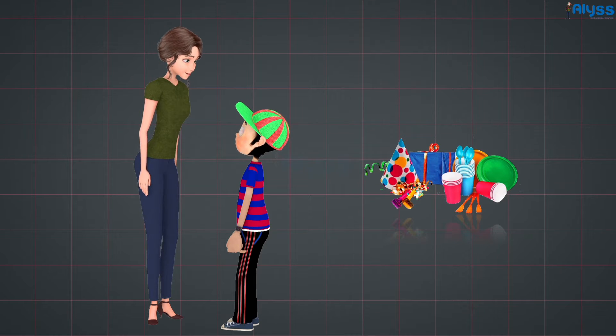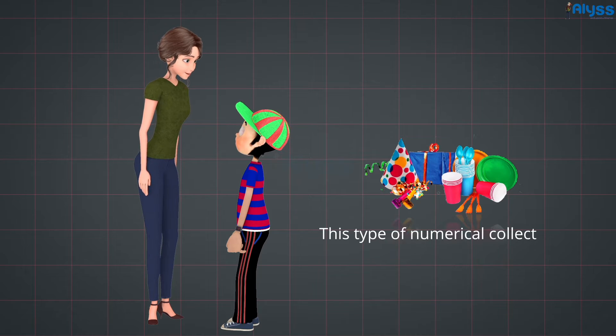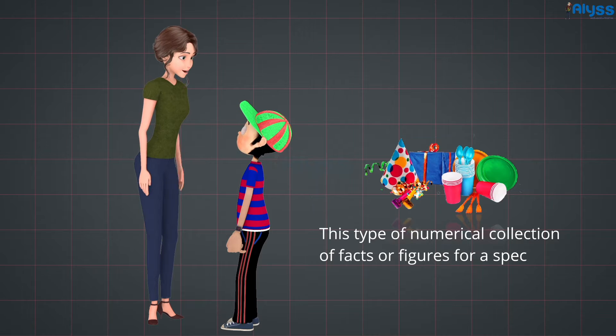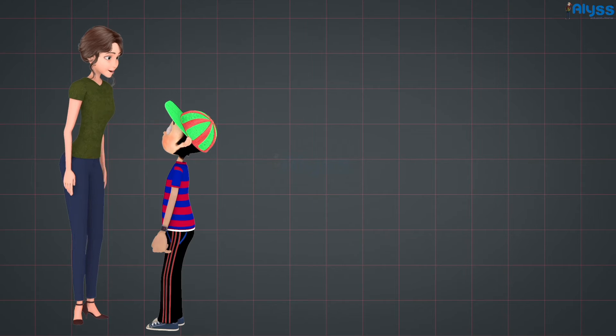If we knew the items, we would be able to ensure proper distribution to all the invited guests. This type of numerical collection of facts or figures for a specific purpose is called data. How is this data collected? Let us understand this with the help of some examples.